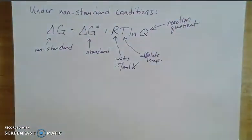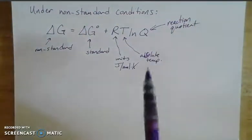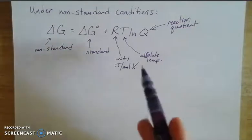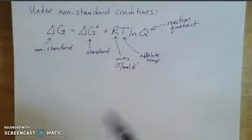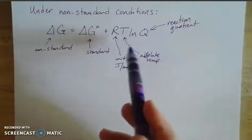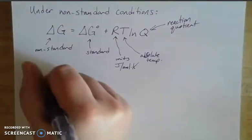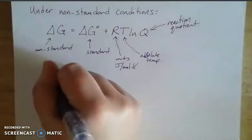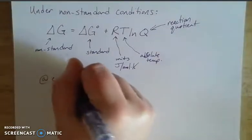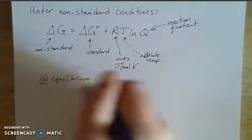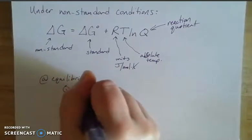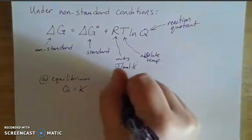And then Q here is our reaction quotient, which we've used in equilibria type equations before, when we've tried to figure out, well, if we're not at standard conditions, or we're not quite at equilibrium, then we can plug values into Q to kind of see where we're at. And so that reaction quotient at equilibrium is equal to K. So Q is equal to K. And at equilibrium, the delta G is going to be equal to 0.